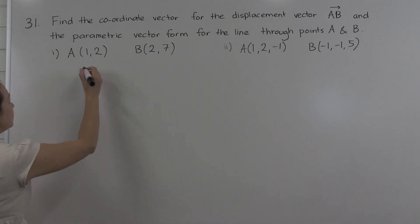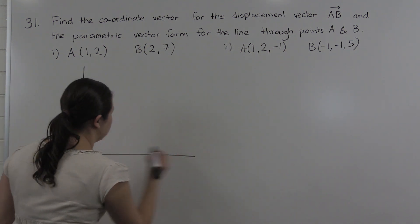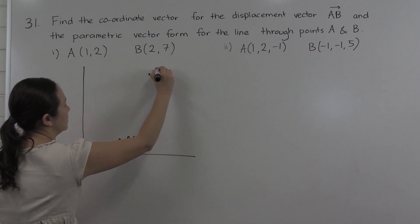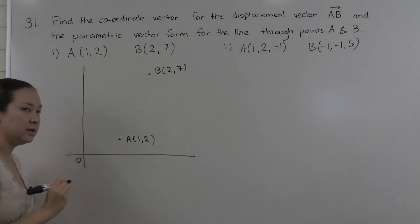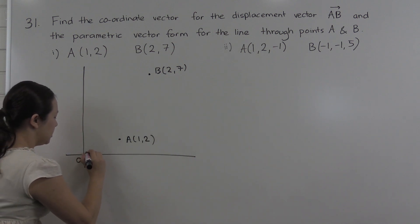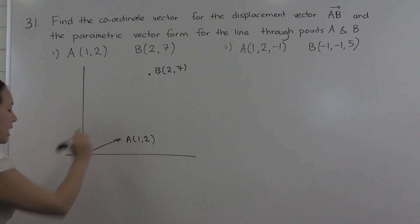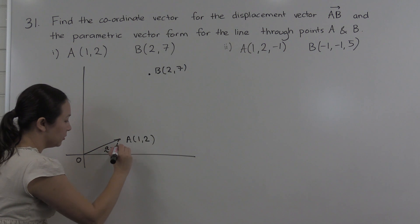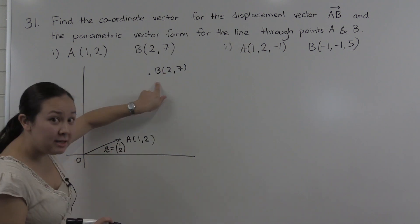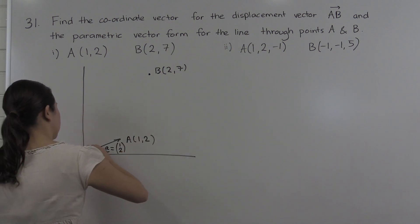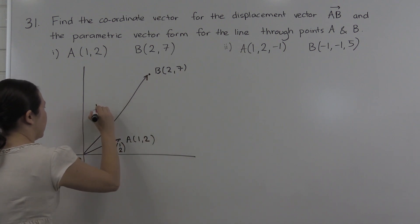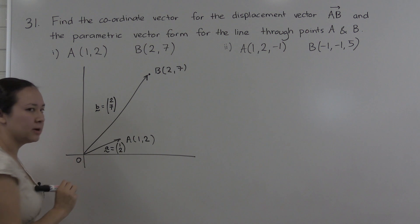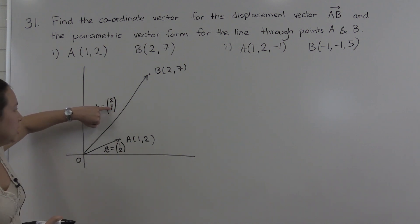If we draw a picture of what's going on, we have our two dimensions here. A is the point (1, 2) and B is the point (2, 7), and our origin is over here. The point (1, 2) we associate with the coordinate vector OA, and we often write that as lowercase a — the vector lowercase a — and in column form that's the vector (1, 2). Similarly, B at (2, 7) is associated with coordinate vector OB, written as lowercase b, and in column form that's the vector (2, 7).